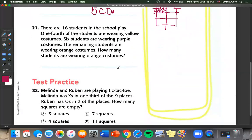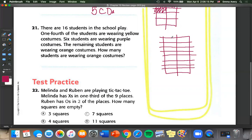Number 21. There are 16 students in the school play. One fourth of the students are wearing yellow costumes. Six students are wearing purple costumes. The remaining students are wearing orange costumes. How many students are wearing orange costumes? So this one, we're going to have to draw a diagram. And we need to show 16 people. One, two, three, four, five, six, seven, and eight. So we've got a total of 16 slots here.